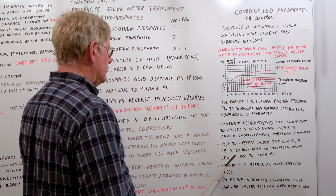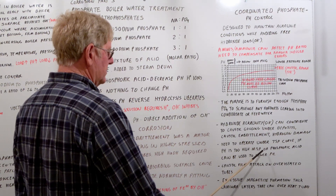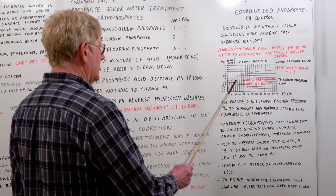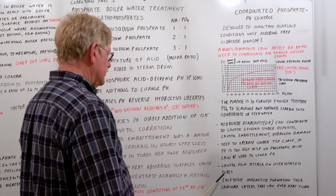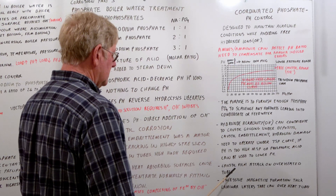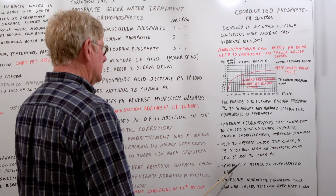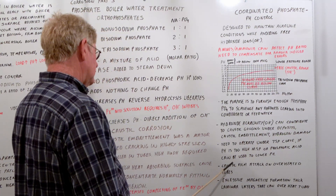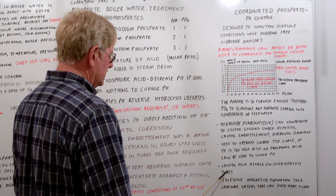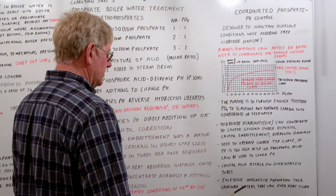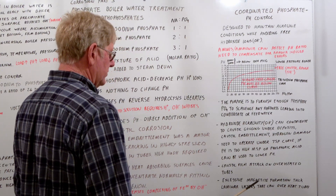You need to operate under the trisodium phosphate curve. If pH is too high, add monosodium phosphate or phosphoric acid to lower the pH and get back out of the free caustic range. Caustic film attack on overheated tubes can result from areas with excessively high heat flux — instead of nucleate boiling, you get film or sheet boiling and compounds in the water concentrate on the metal. The thicker the layer of deposits, the less heat transfer you have, which can overheat tubes. Excessive magnetite formation in thick laminar layers can also inhibit heat flow and overheat the tubes, even though thin magnetite layers are beneficial.